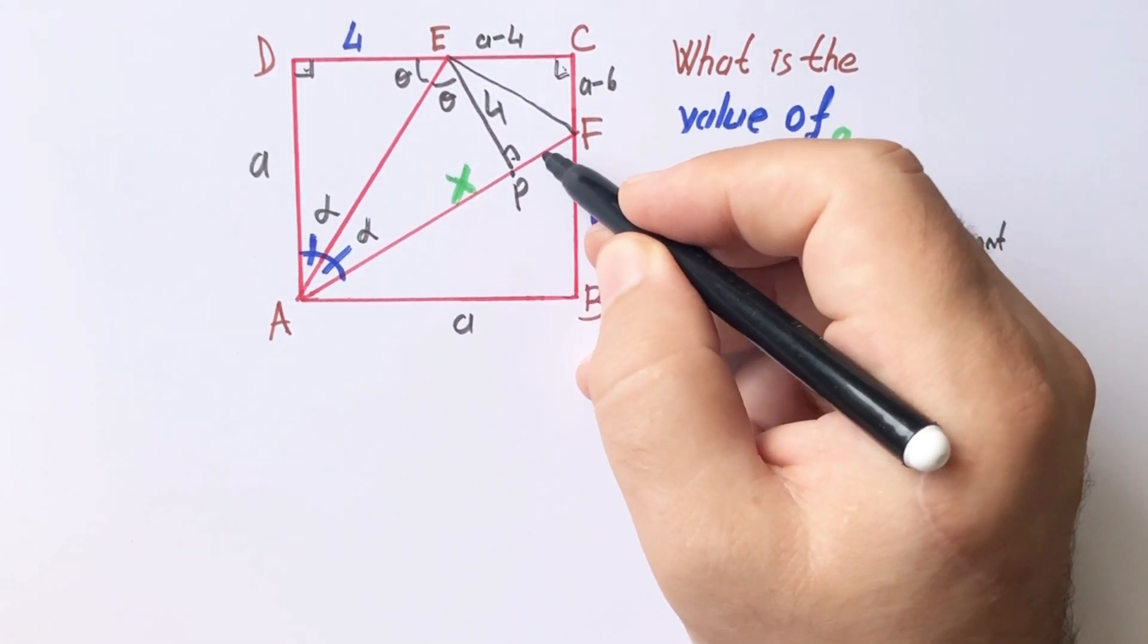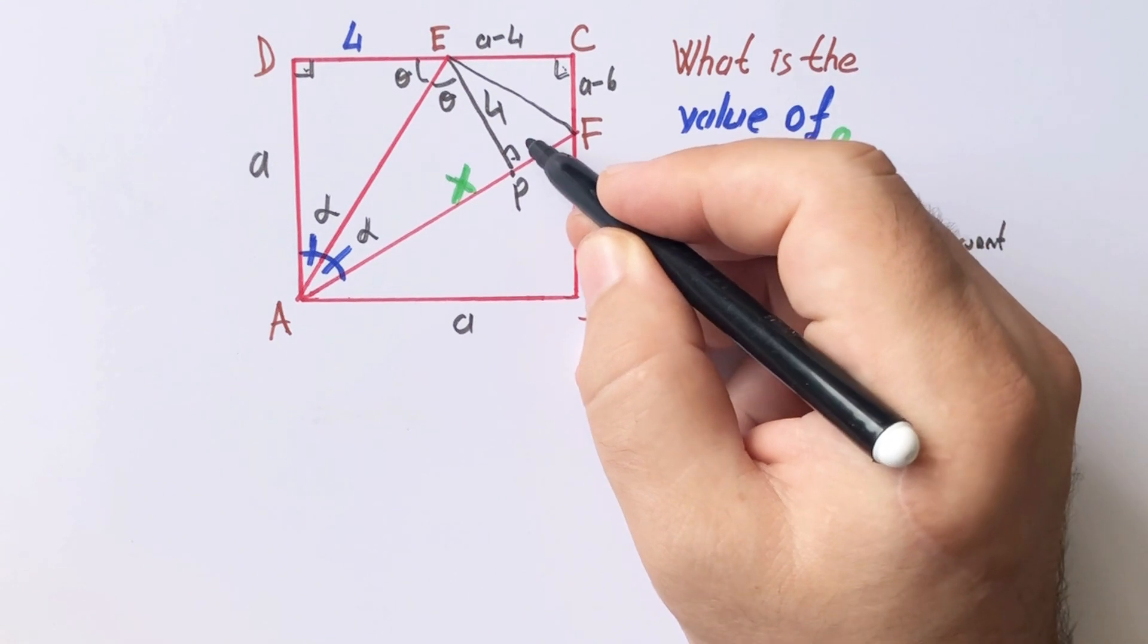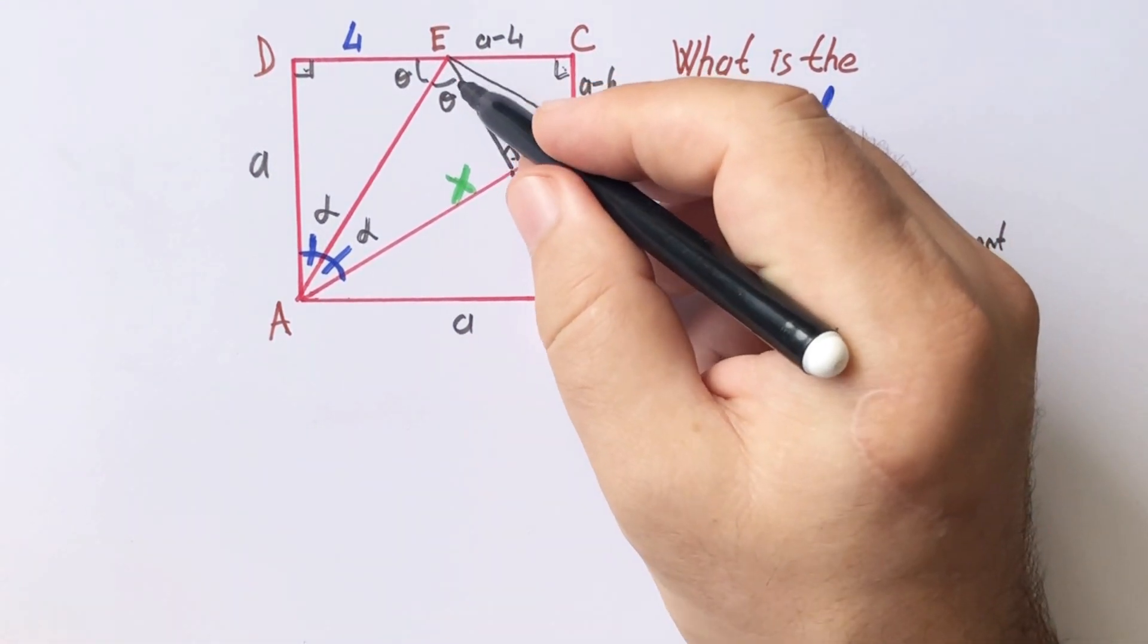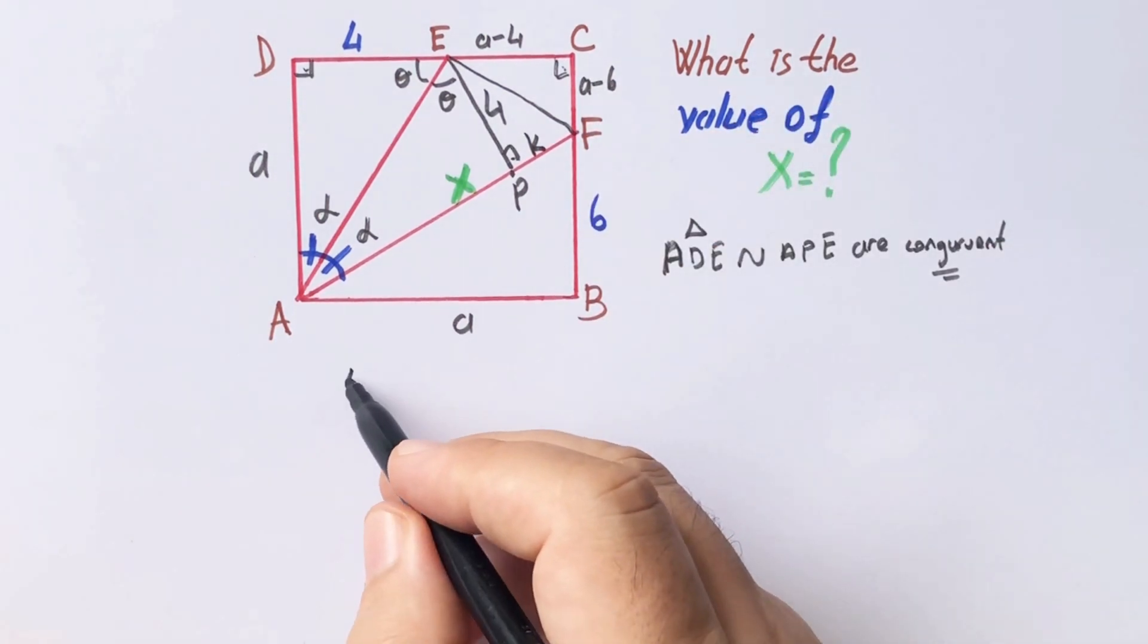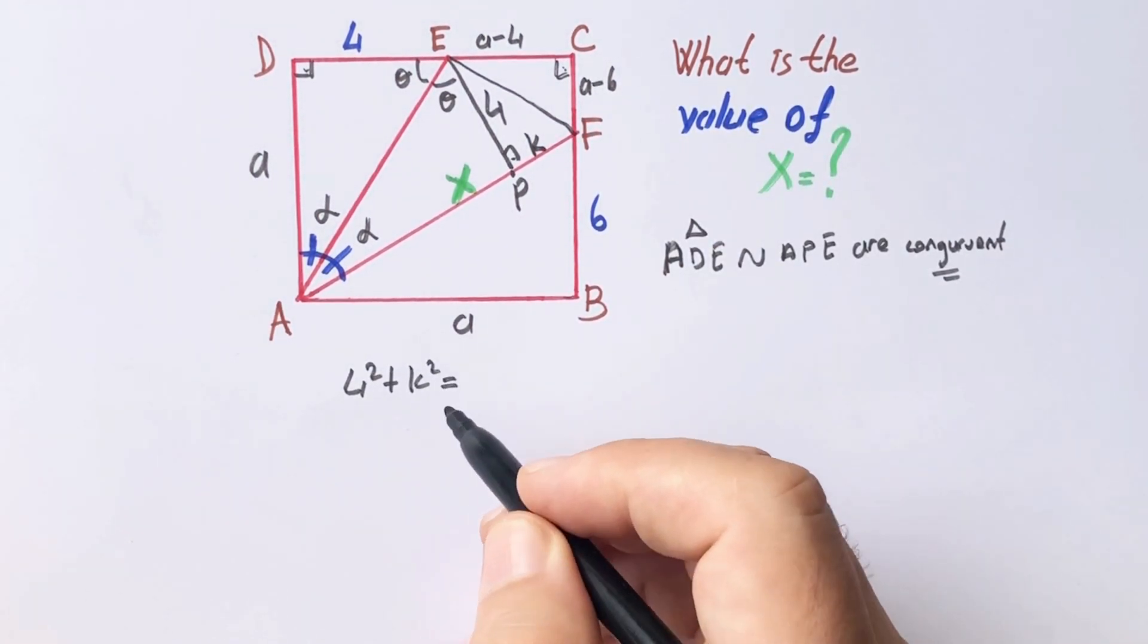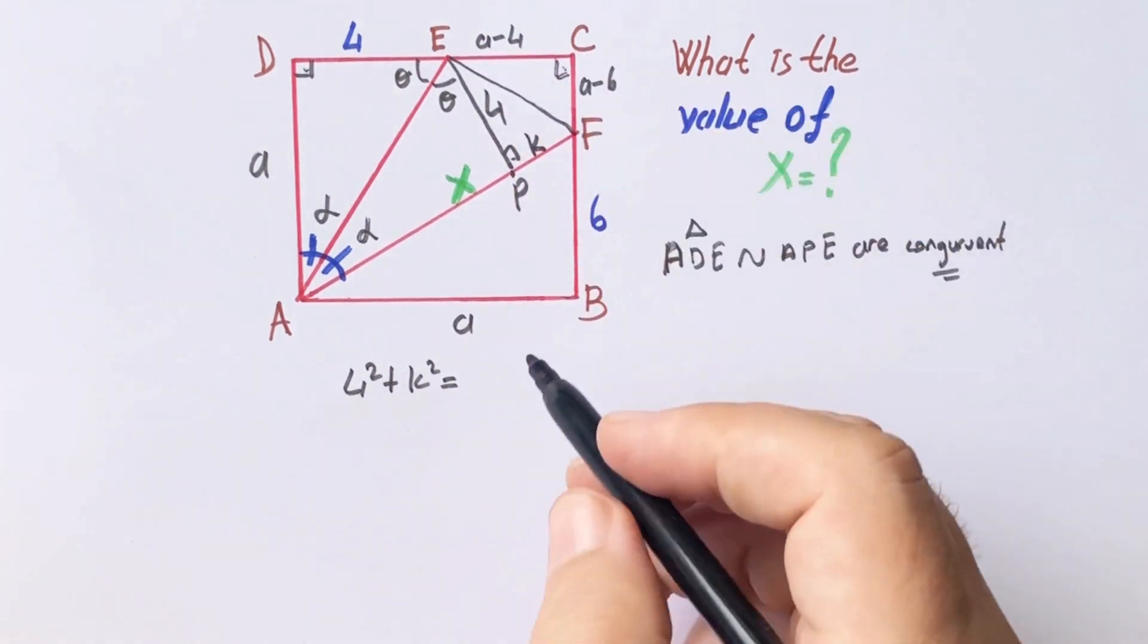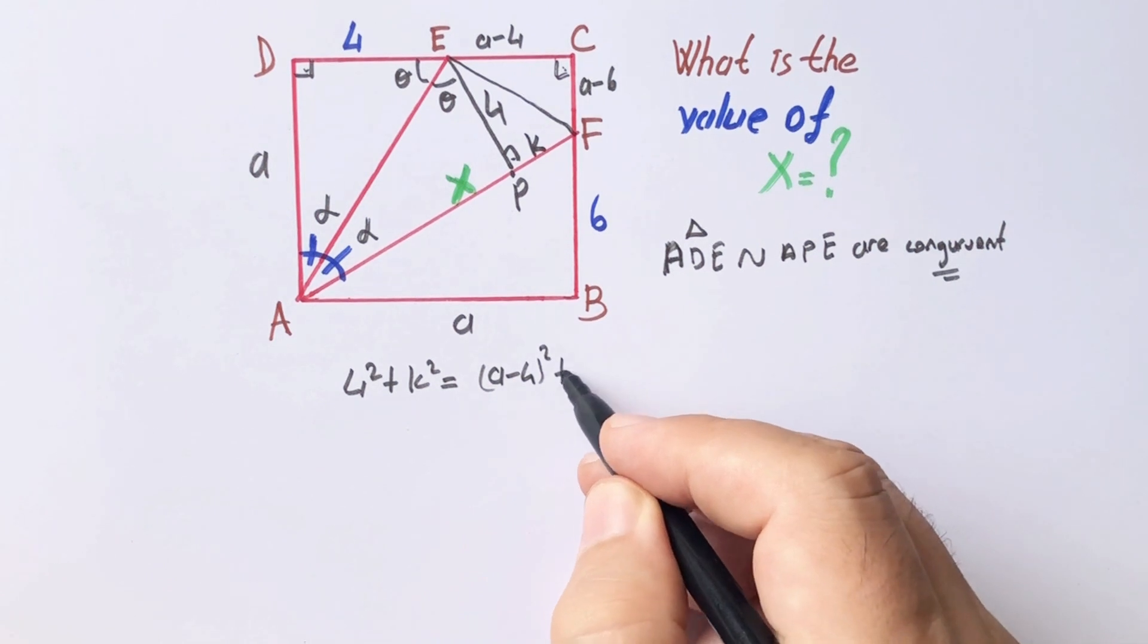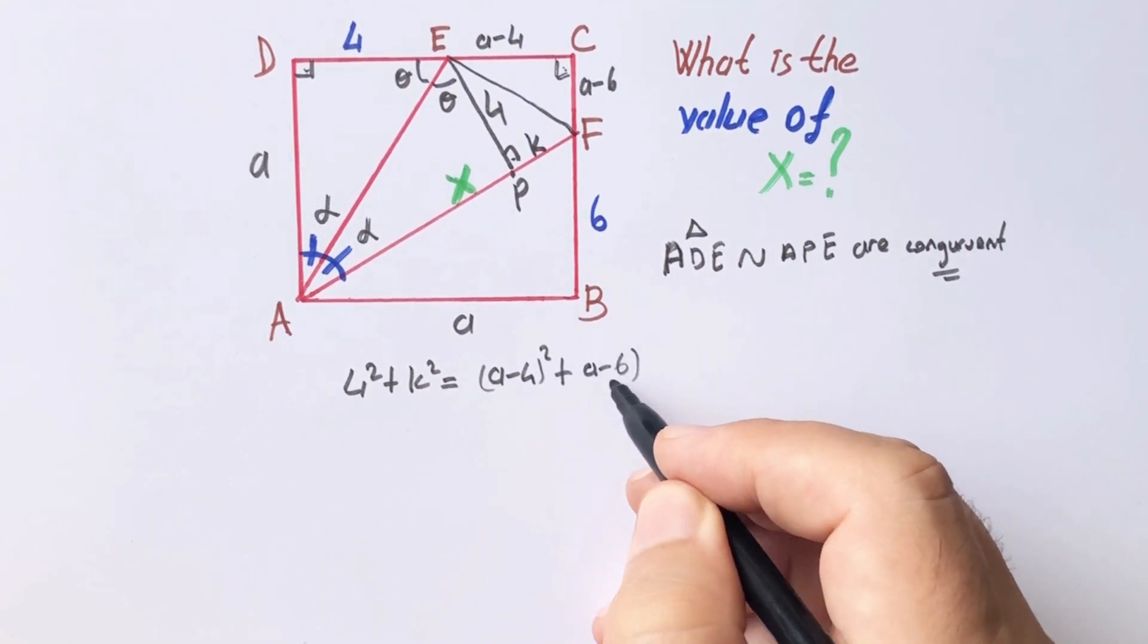Let's call this length k units. In this triangle, if we apply Pythagorean theorem, four squared plus k squared equal a minus four squared plus a minus six squared.